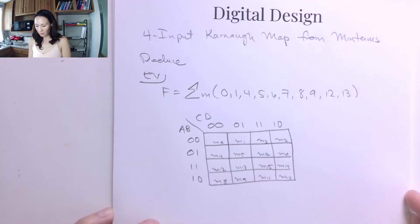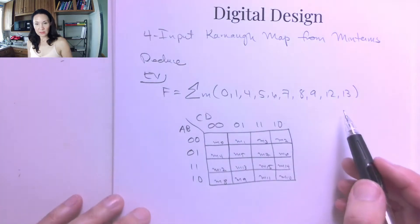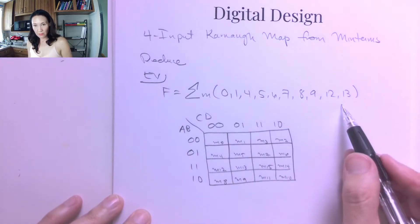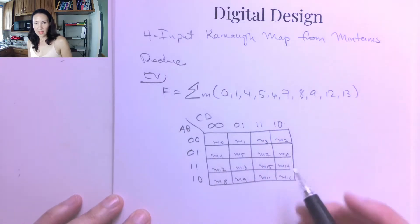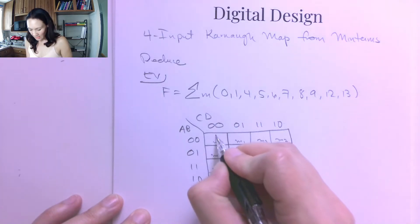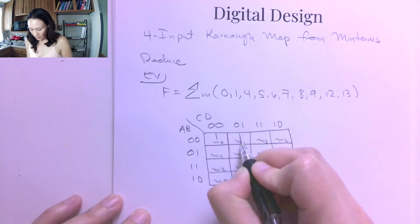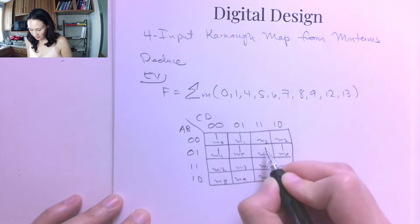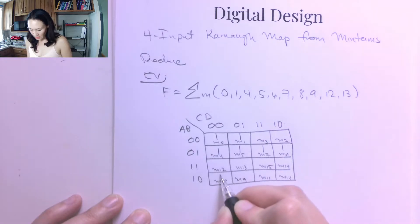So now it's easy. I just look at my list of minterms, and wherever I see a number, I'm going to put in a 1 in that location. So I have a 1 at minterm 0, 1, 4, 5, 6, 7, and then 8, and 9, and 12, and 13.